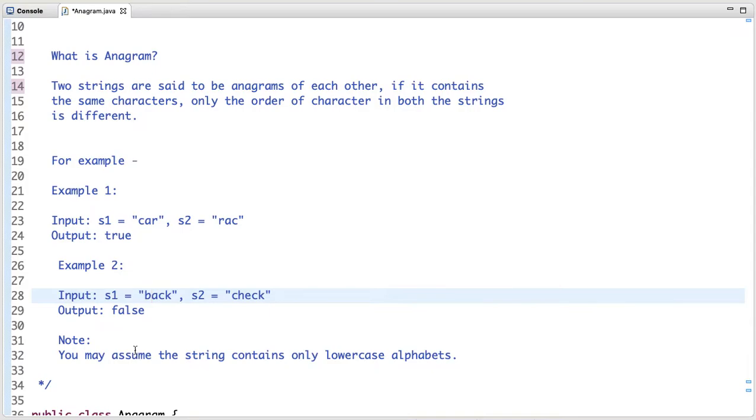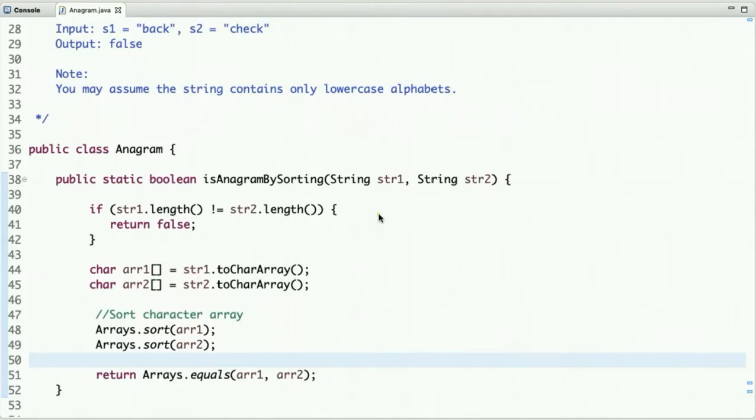Before solving this problem, let's think for a moment what's your approach to solve this. The first approach is to sort both strings and compare. If both strings are equal then it's an anagram, otherwise it's not. If you recall the anagram property, two strings are said to be anagrams if they contain the same characters, only the order of characters is different.